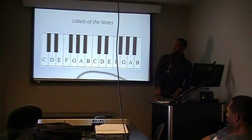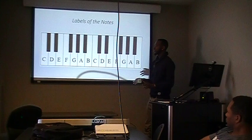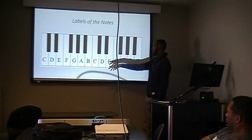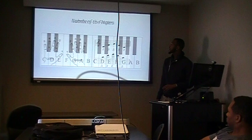The first thing you need to know is the label of the keys. The keys follow the alphabet. They start from A all the way up to G. There are also keys called sharps and flats that I'll explain later in another slide. The main thing you need to know is the labels of the keys, which is A through G.